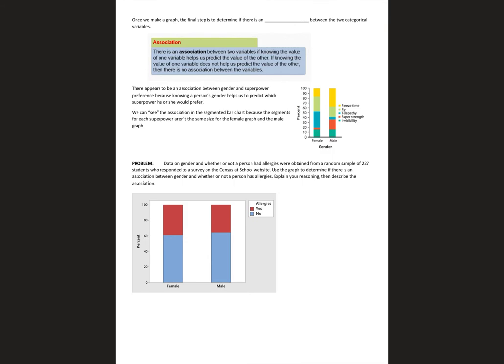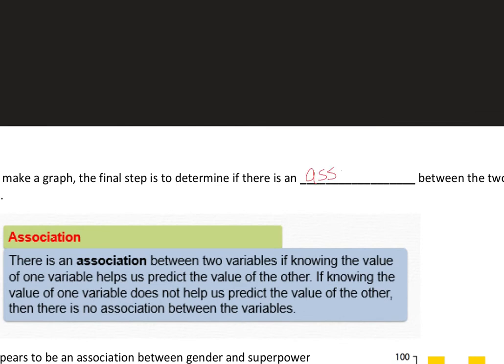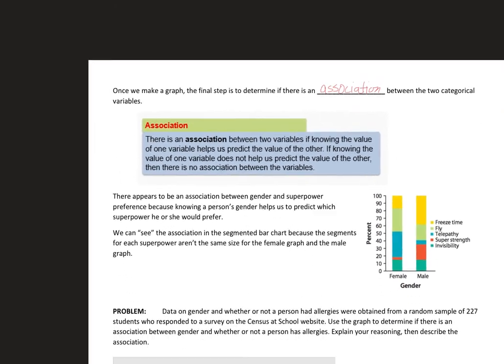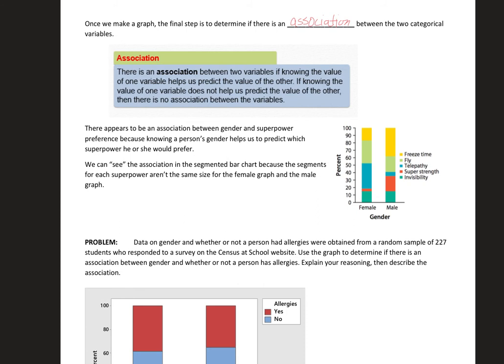To wrap up, we want to figure out how to talk about these graphs — whether or not there's an association between the two variables. Just like with bar graphs, it's very subjective, but if we see a pattern or notice one bar is bigger than the other in one category, we say so. There's an association between two variables if knowing the value of one variable helps us predict the value of the other. In the superpower/gender graph, if someone says freeze time is their favorite superpower, you'd predict they're probably male, since more males prefer it.